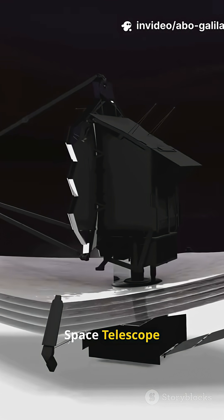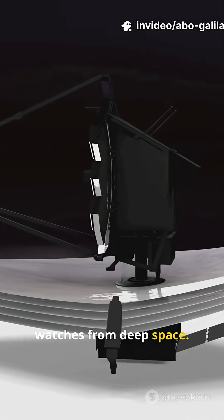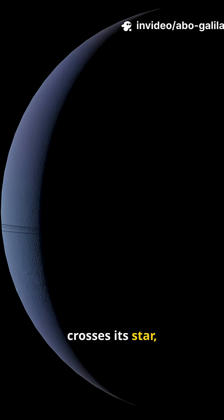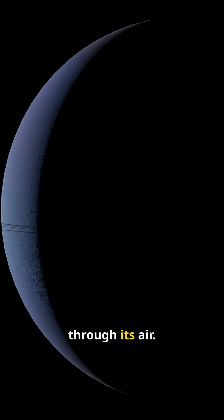The James Webb Space Telescope watches from deep space. When the planet crosses its star, a whisper of starlight filters through its air.